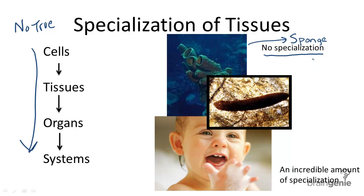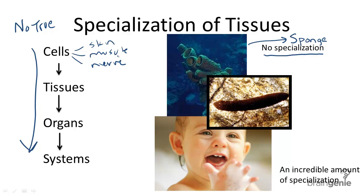Think of a ball of clay. When that ball of clay lacks shape, it is unspecialized. When it's shaped into a bowl or a robot, it is now specialized. An example of this is looking at different types of cells — there are skin cells, muscle cells, nerve cells, and so on. These are specialized because they have specific functions.